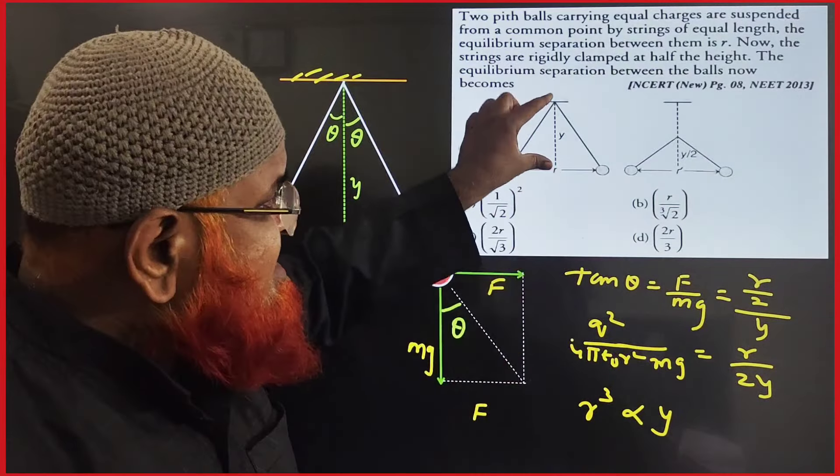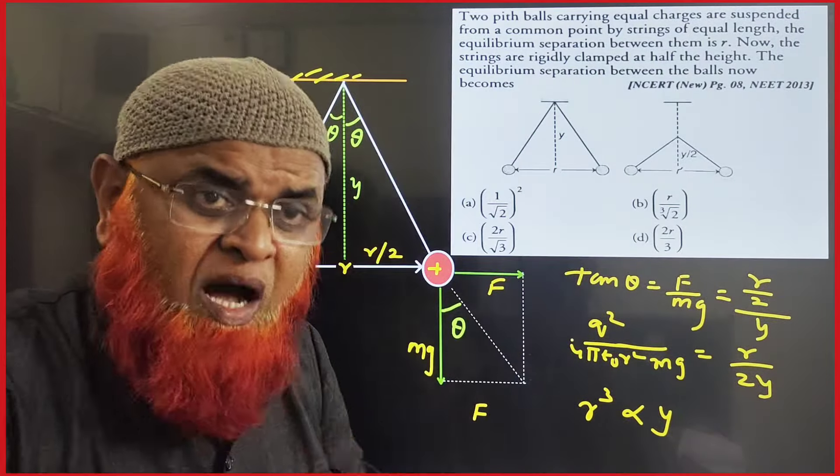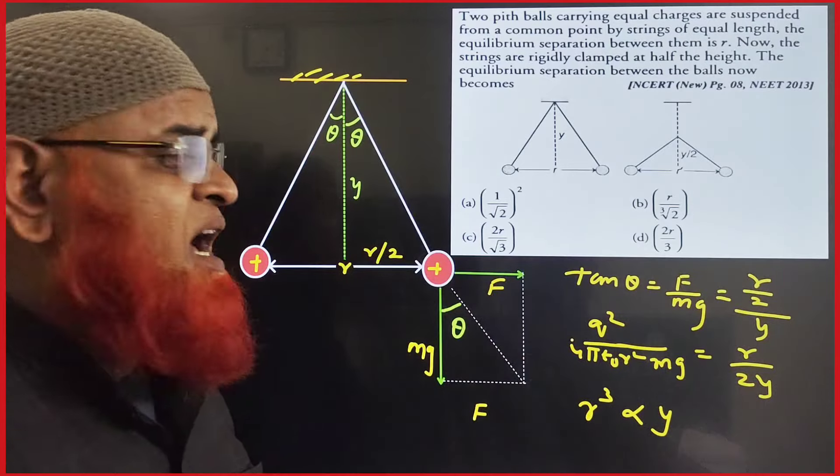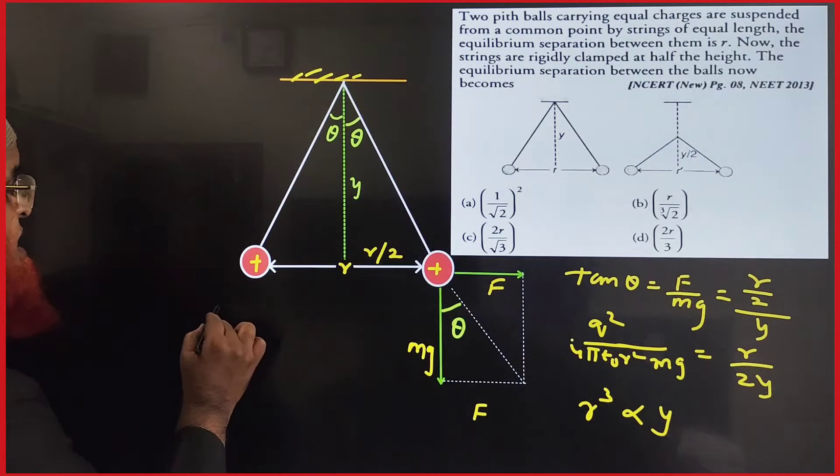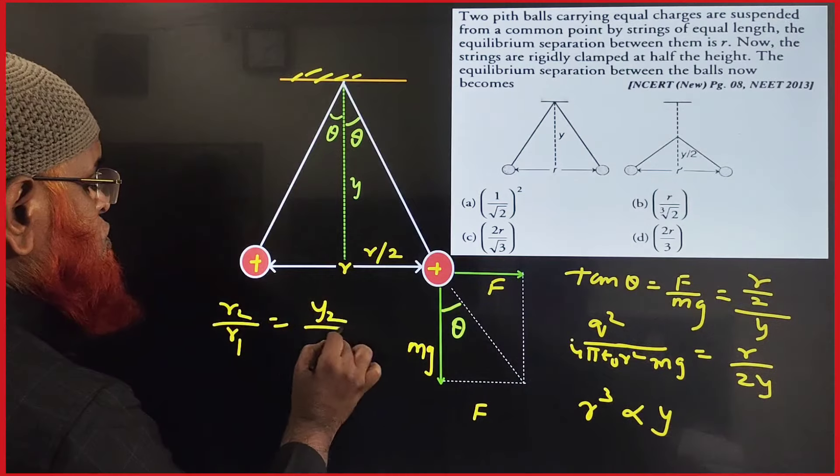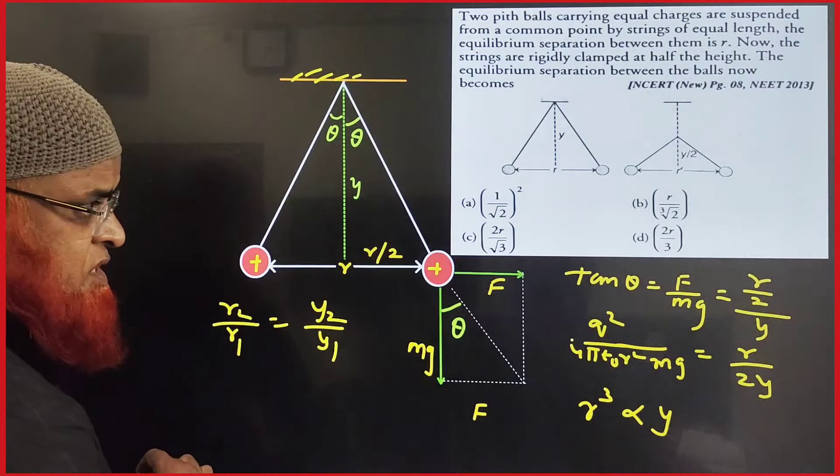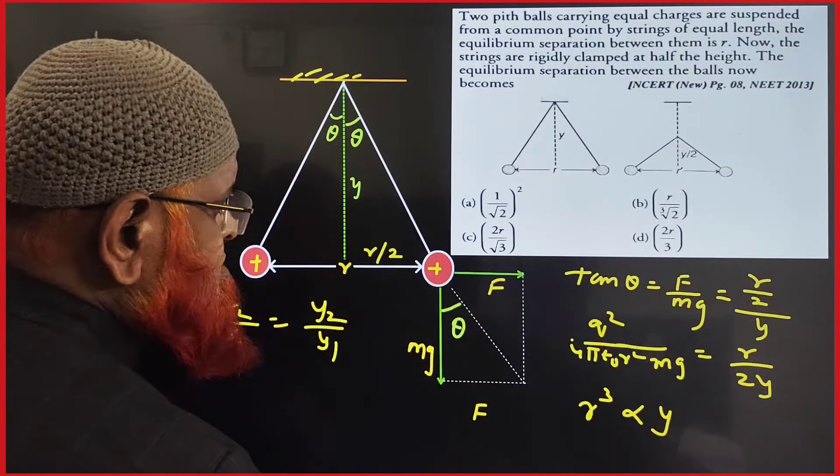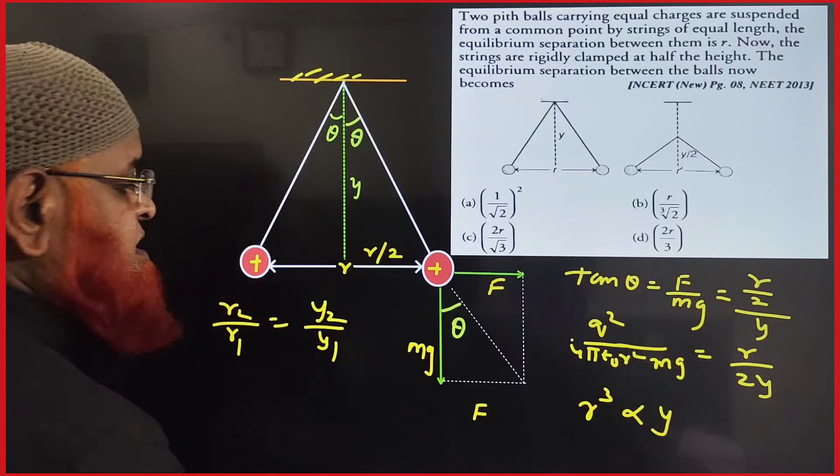Here it is Y, here it is Y, here it is Y by 2. So this vertical distance had been reduced to half, then what happens to this R here? What does the simple thing here? You can write here R₂ by R₁ is equal to Y₂ by Y₁. Then what is going to happen? Let us see here.